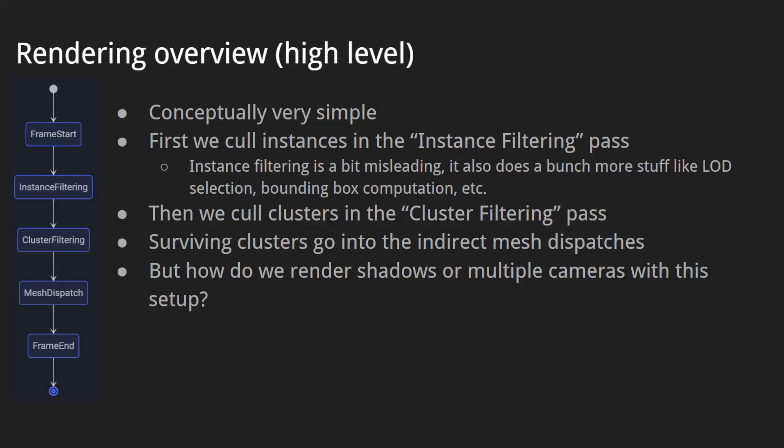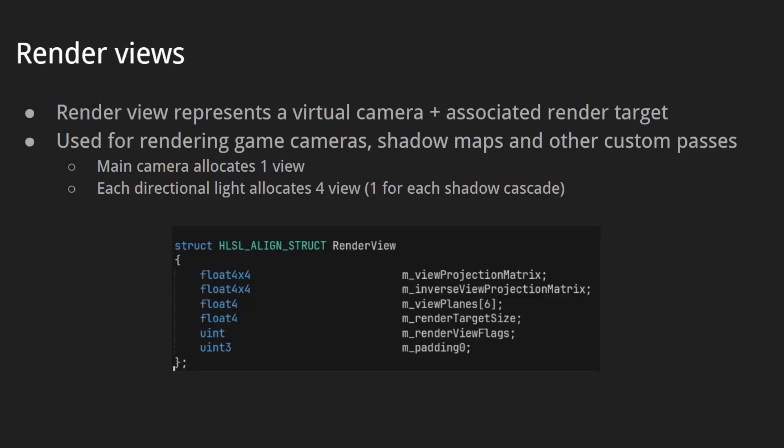How do we render shadows for multiple cameras with this setup? Let's introduce the concept of the render view. The render view represents a virtual camera and an associated render target. It is used for rendering game cameras, shadow maps, and other custom passes. The main camera allocates one view; each directional light allocates four views, one for each shadow cascade. It stores view projection matrices, view planes, and other things.